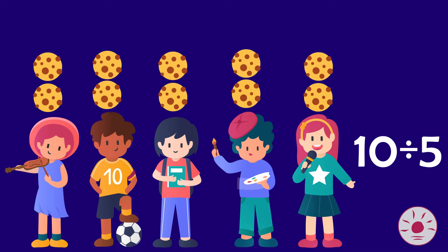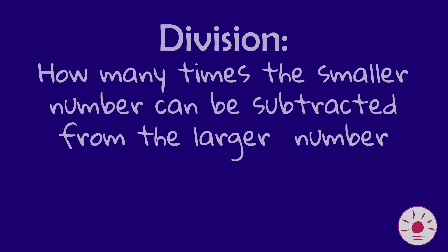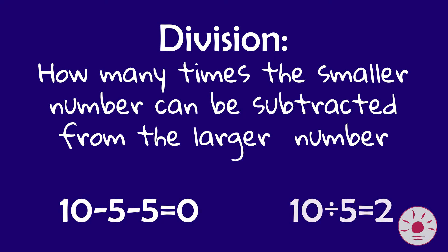That means five goes into ten twice, or ten divided by five is two. You can think of division as the number of times a small number can be removed or subtracted from a larger number. Here we subtracted five twice from ten. That's why ten divided by five is two.